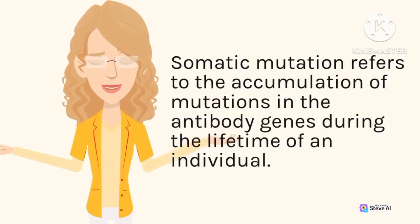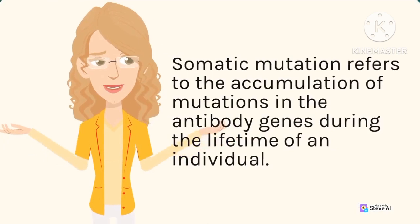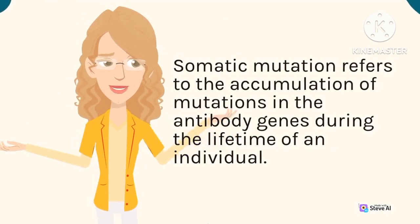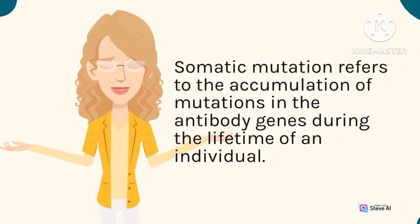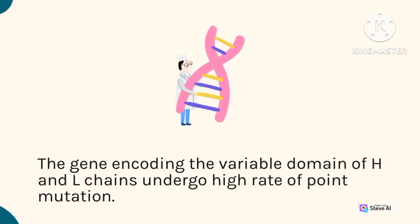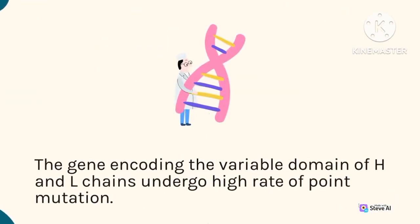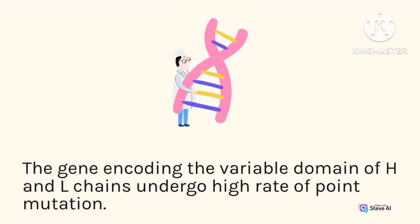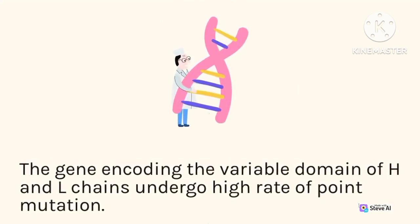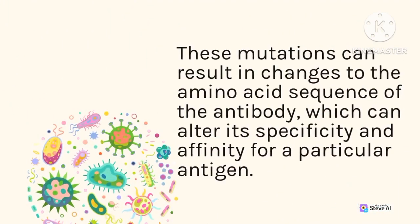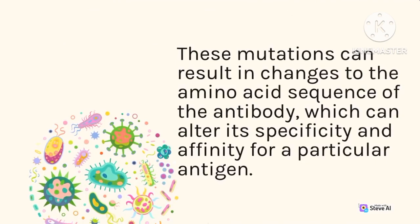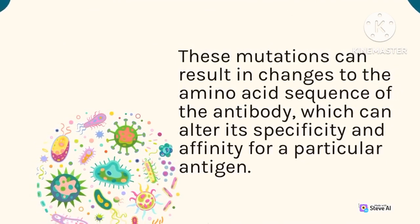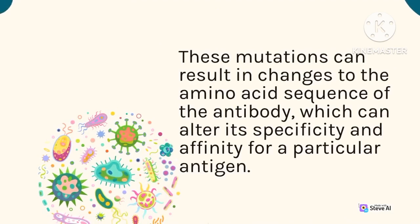Somatic mutation refers to the accumulation of mutations in the antibody genes during the lifetime of an individual. The genes encoding the variable domain of the heavy and light chains undergo a high rate of point mutation. These mutations can result in changes to the amino acid sequence of the antibody, which can alter its specificity and affinity for a particular antigen.